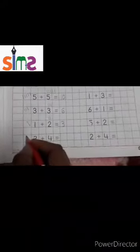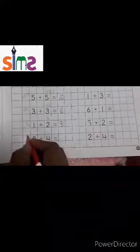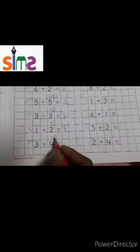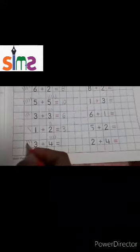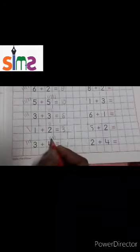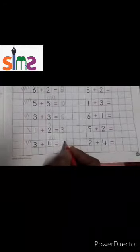Three: one, two, three. Four number — one, two, three, four. Count all the lines: one, two, three, four, five, six, seven. So three plus four is equal to seven.